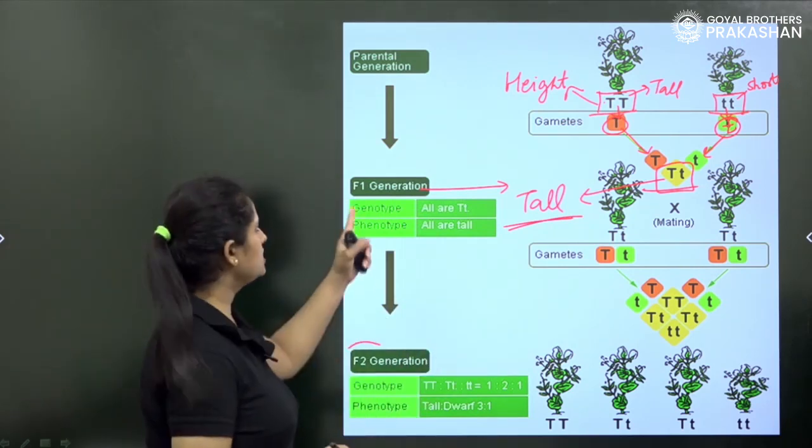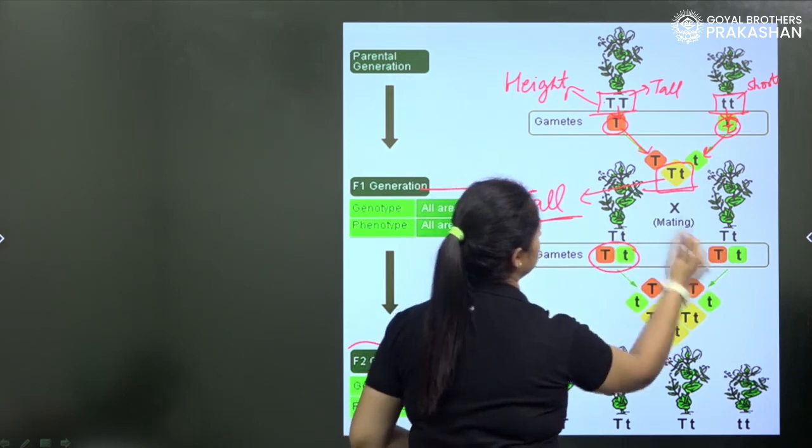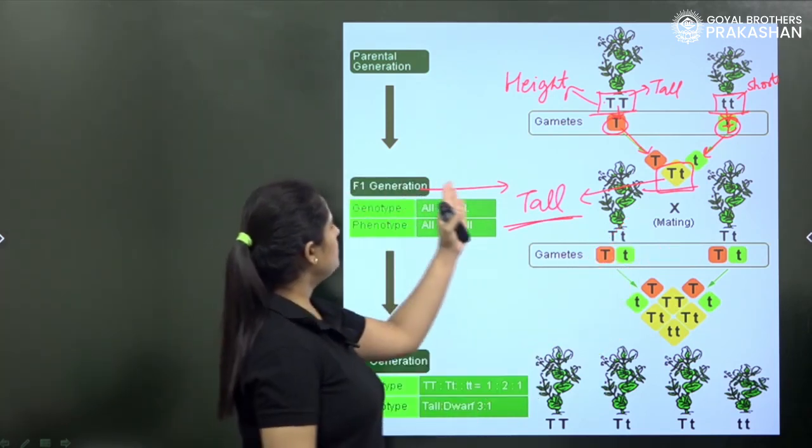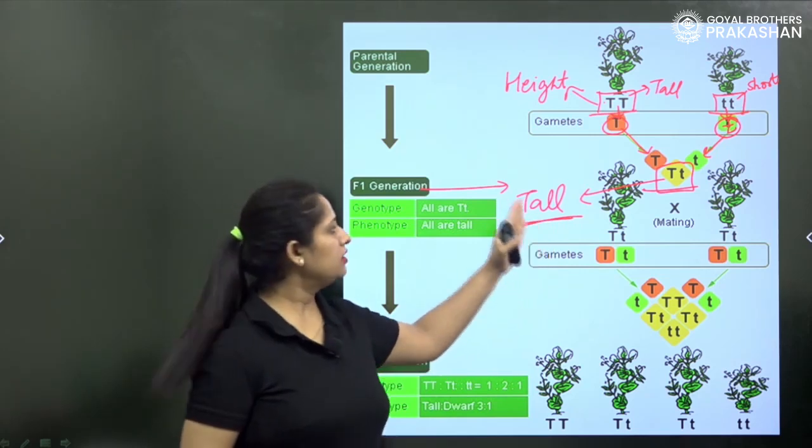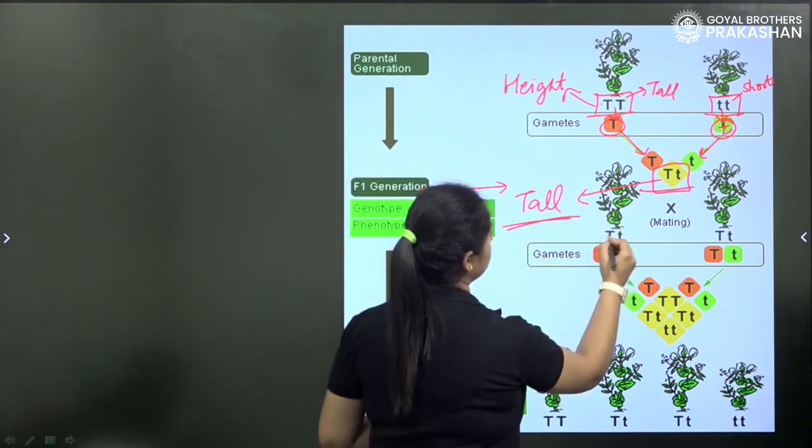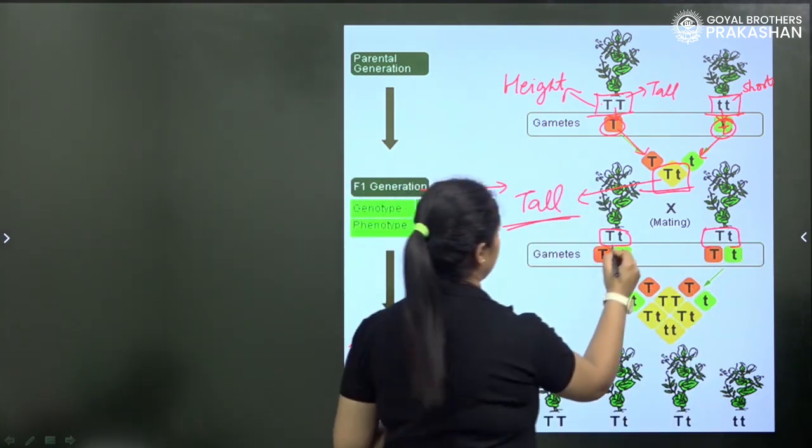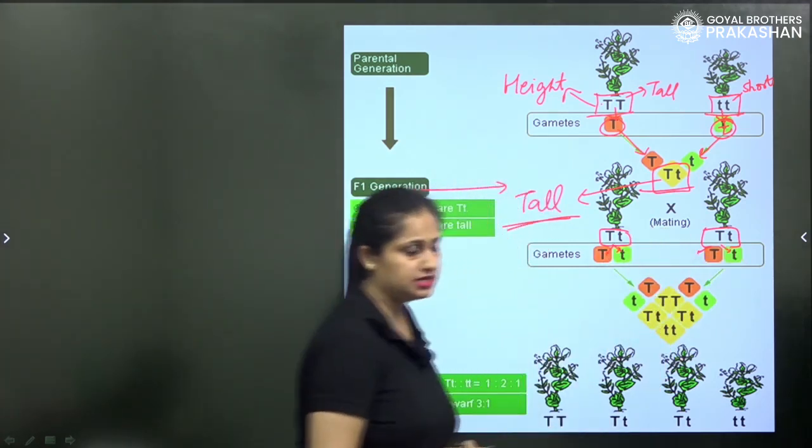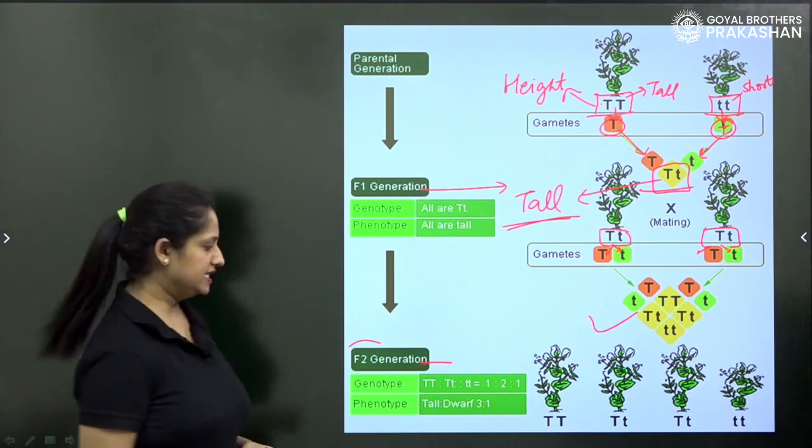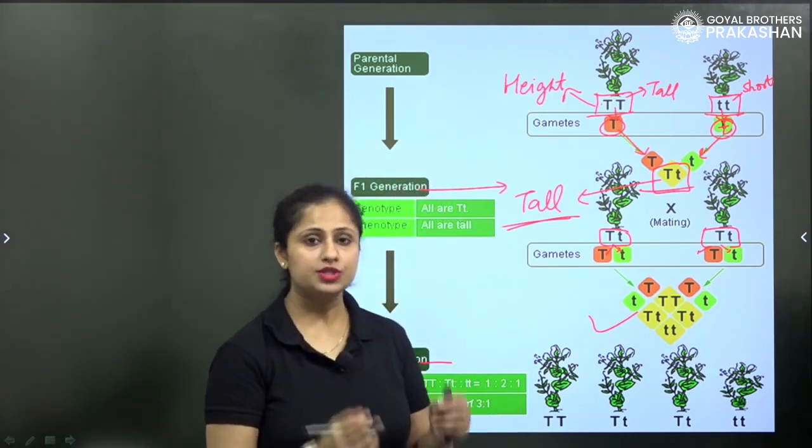In the F1 generation or the very first cross, all the progeny was tall. Then he self-pollinated the first generation, that is he made a cross between Tt. This is F1 self-pollination. He observed in F1 generation that all the progeny were tall. Then he made a self-cross of F1 generation. In F2 generation, he saw that not all varieties or not all progeny were tall but some of them were small also.